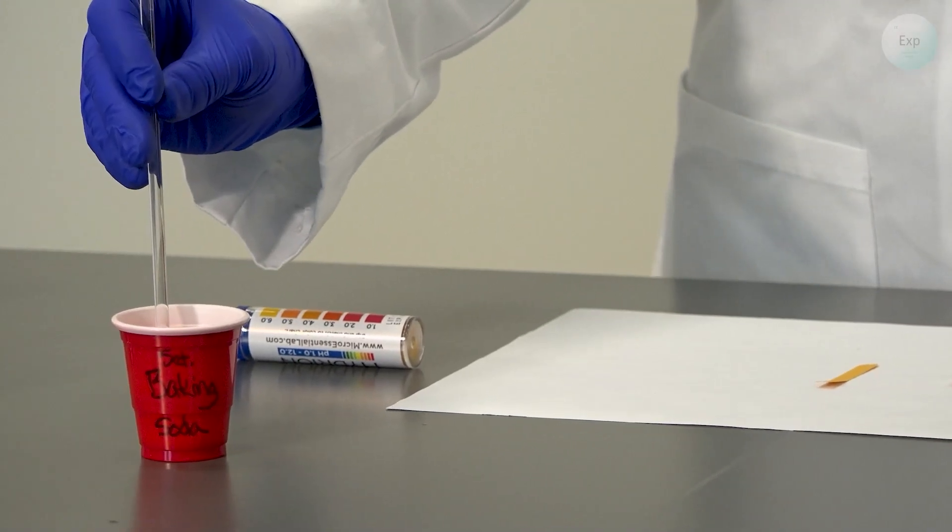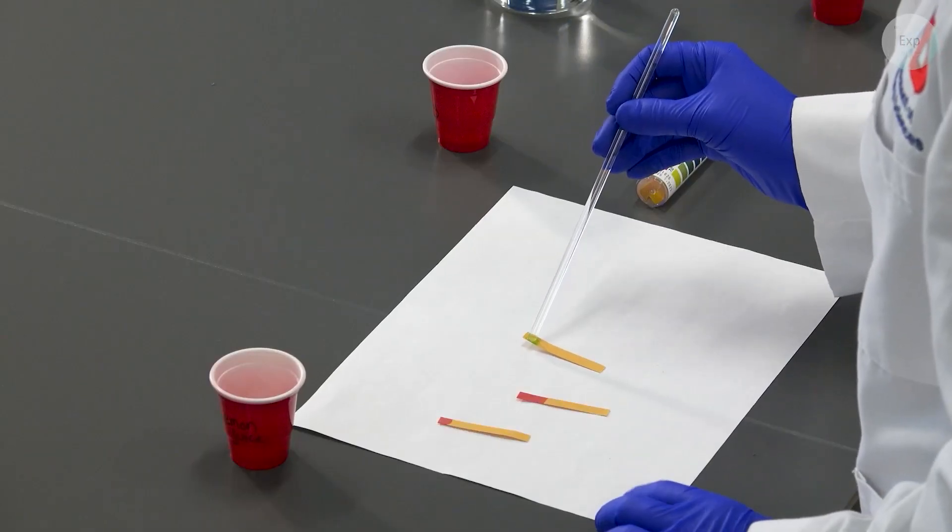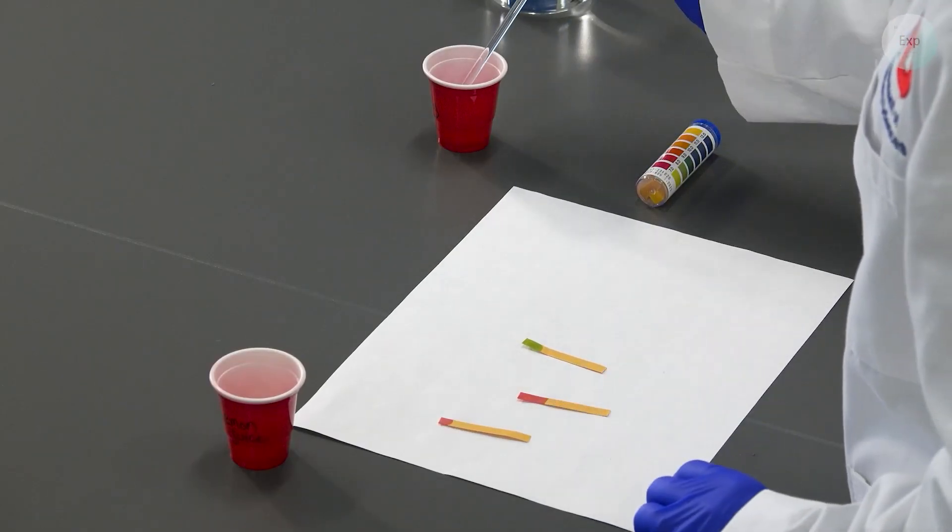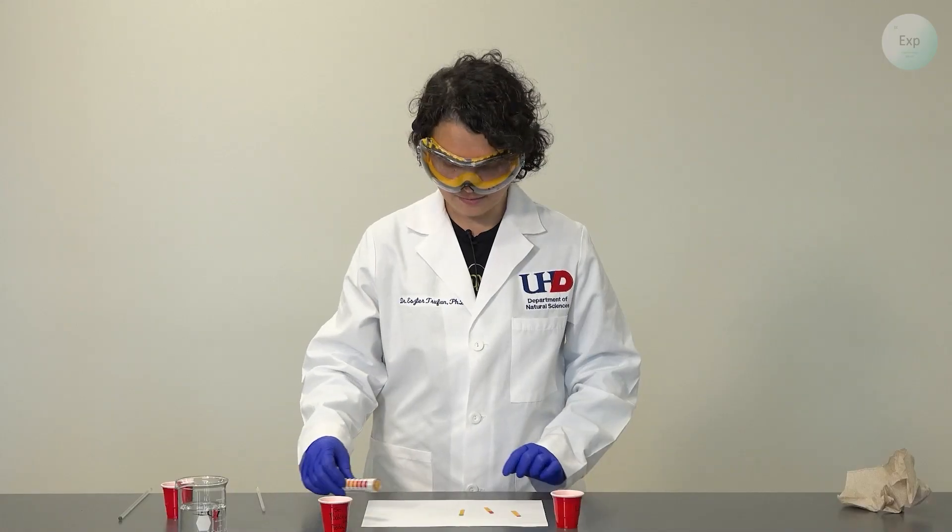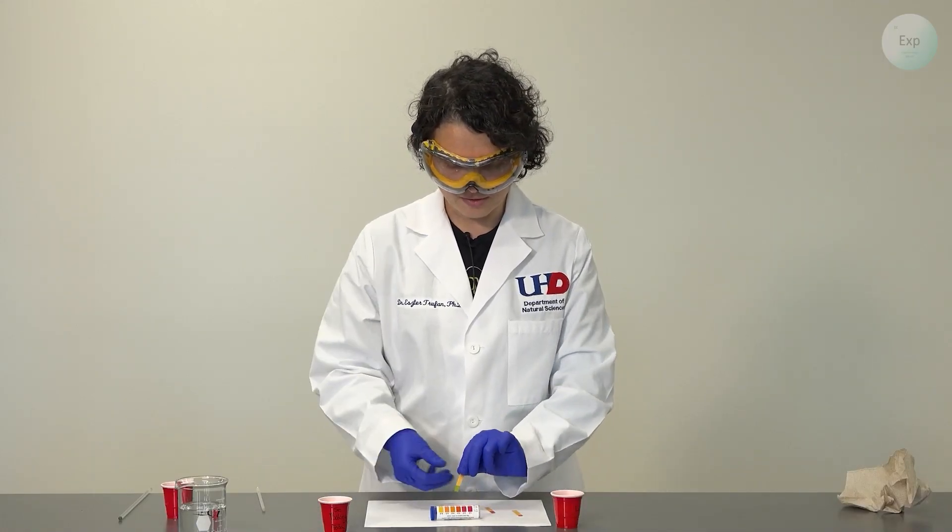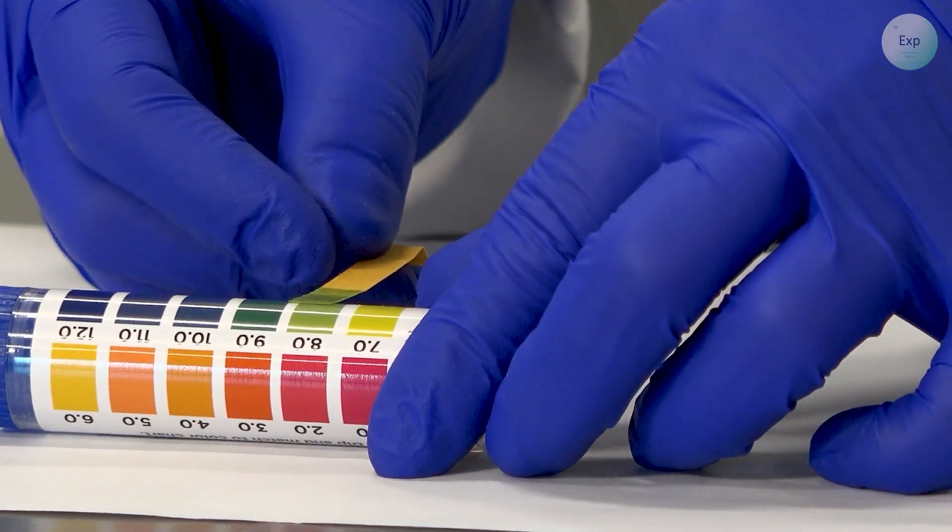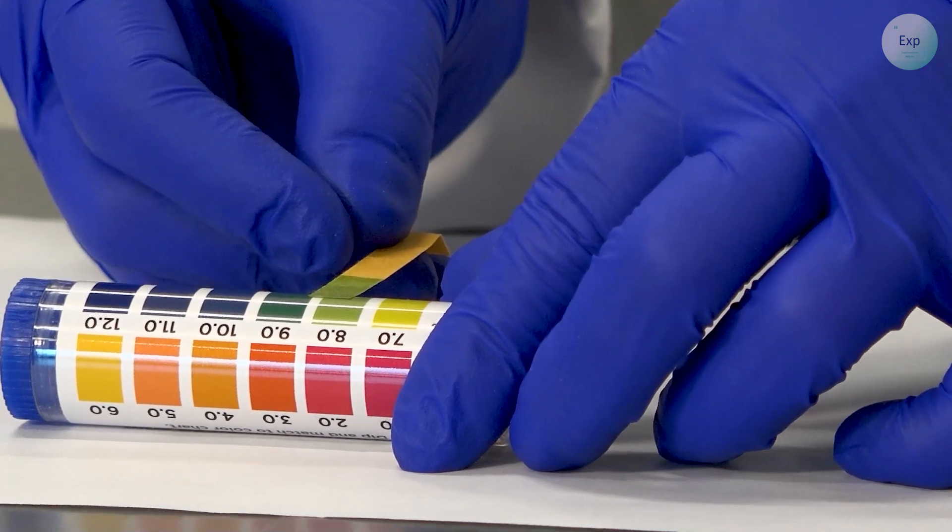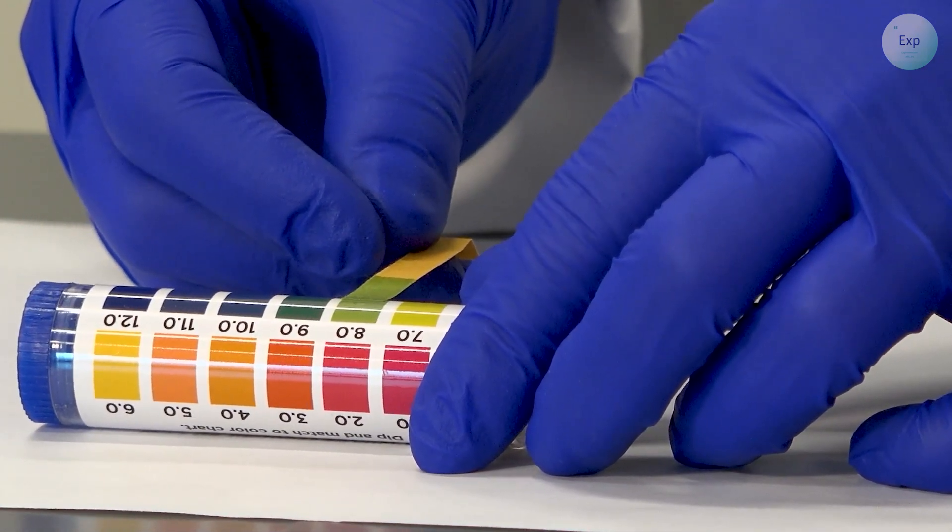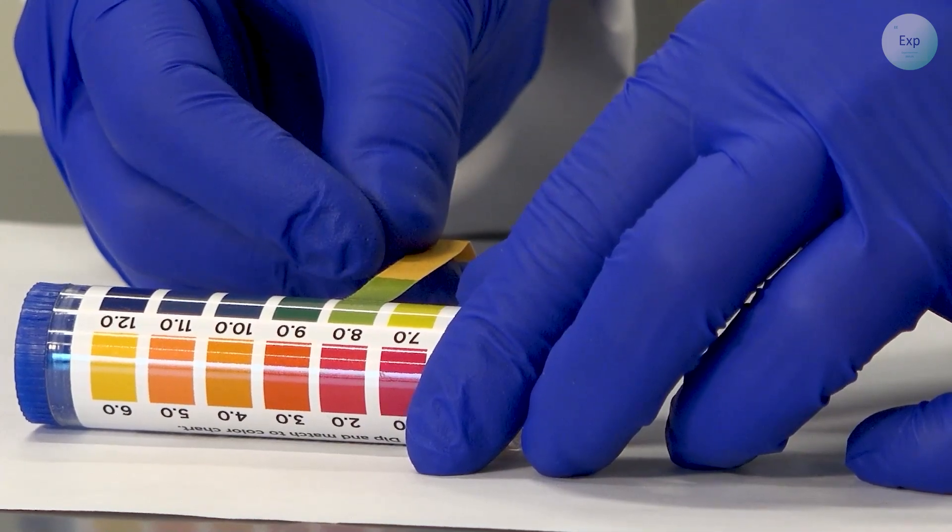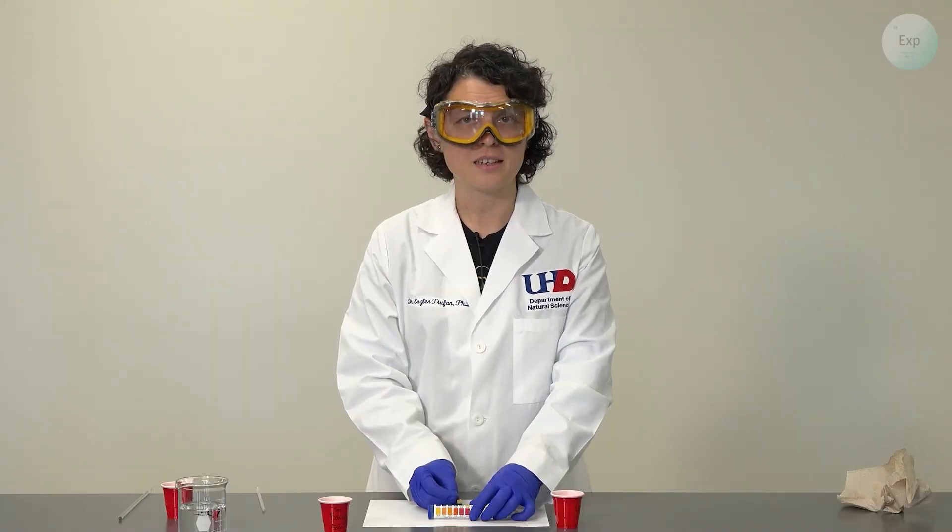We dip the stirring rod in there and then place a drop on the pH paper. Now we wait a little and then we compare the color response to the scale and in this case we see that the green color that was elicited is most similar to the pH of 8 on the paper. It may be between 8 and 9 but it is at least 8.